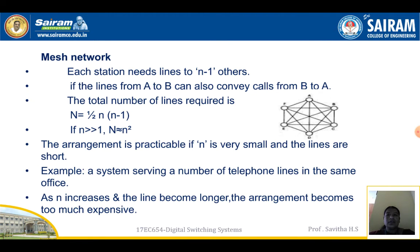In a mesh network, each station needs lines to N-1 others. If the line from A to B can also convey calls from B to A, the total number of lines required is N = (1/2) × N × (N-1). If N is greater than 1, N is approximately equal to N squared.